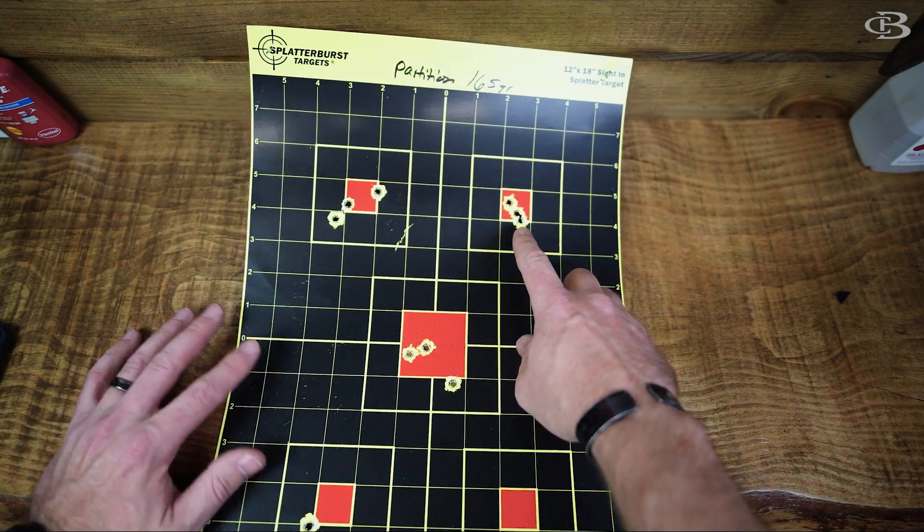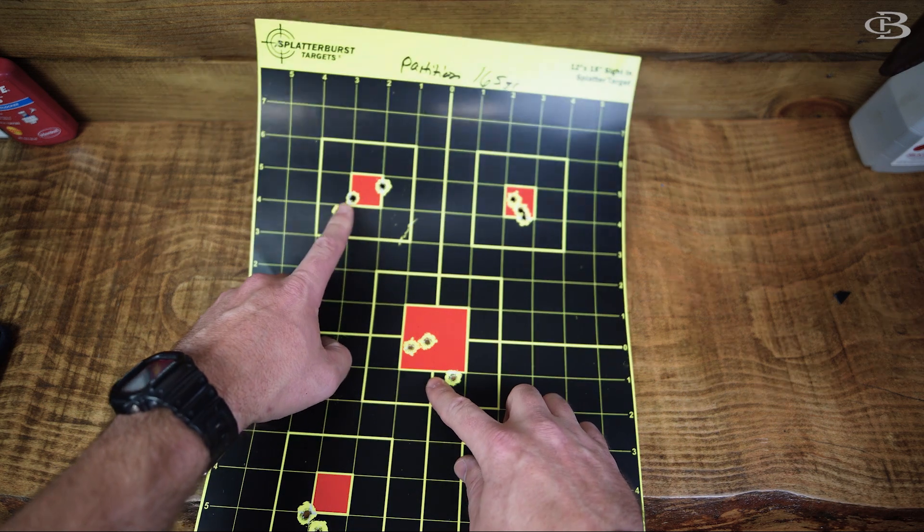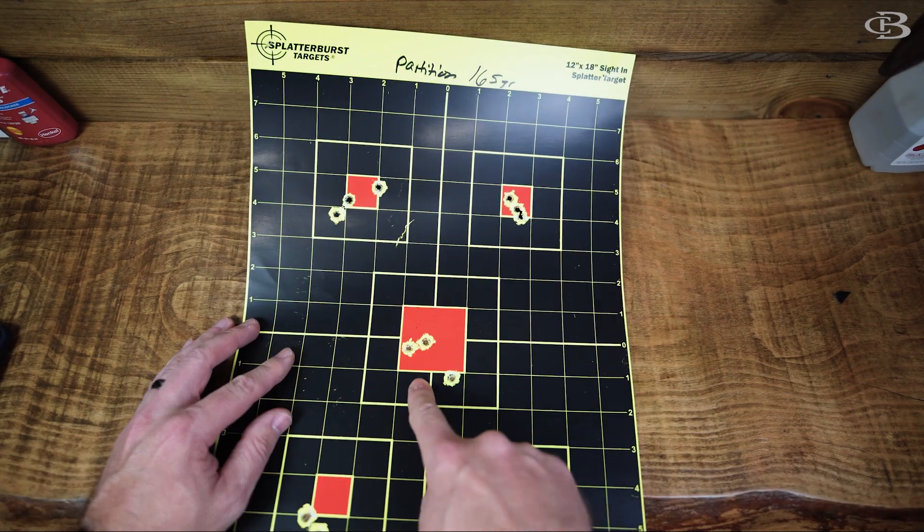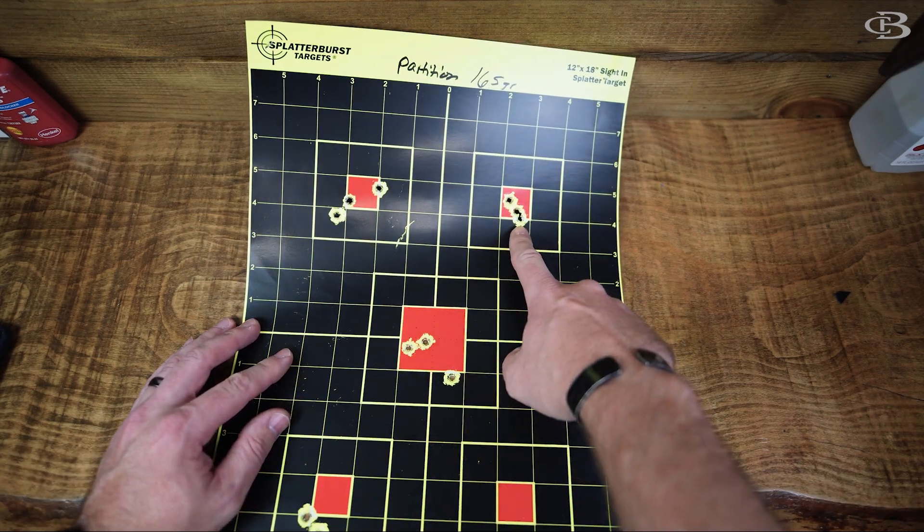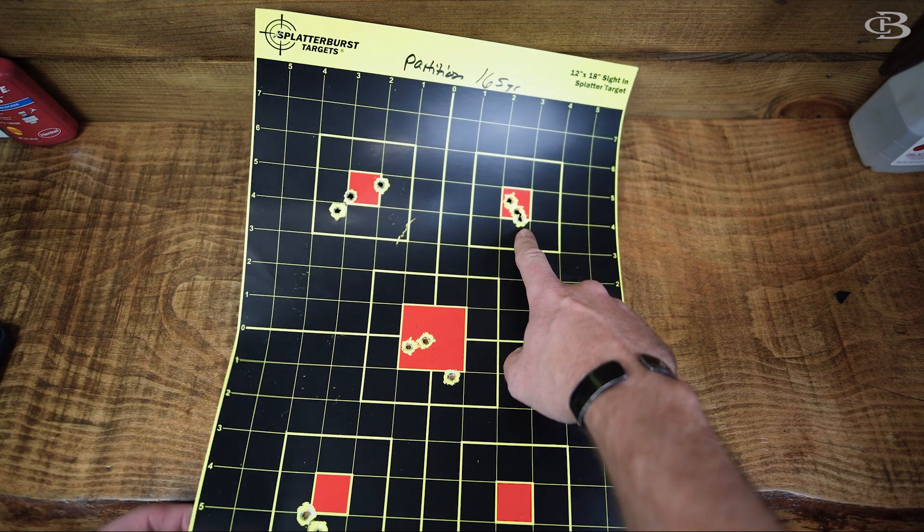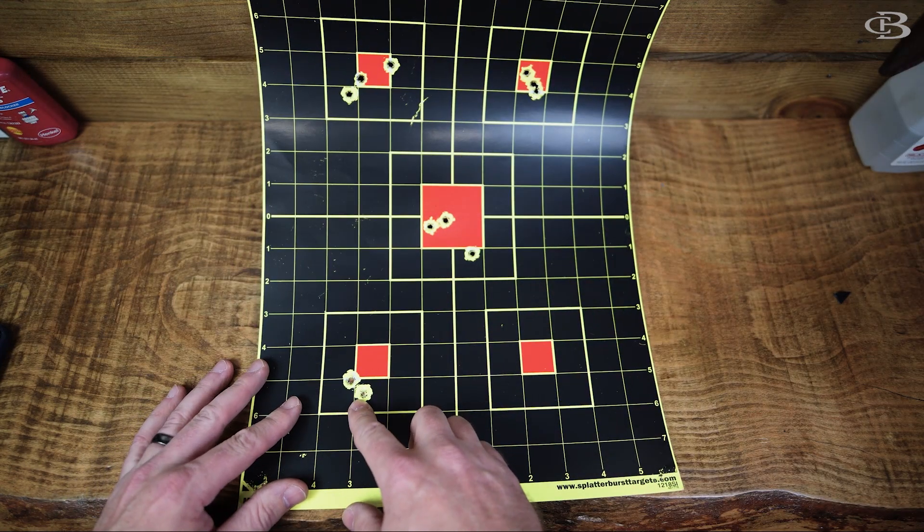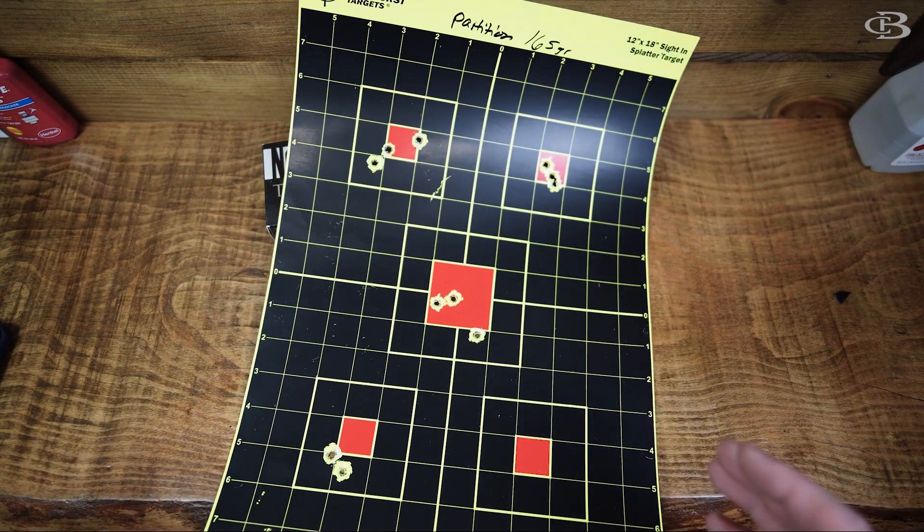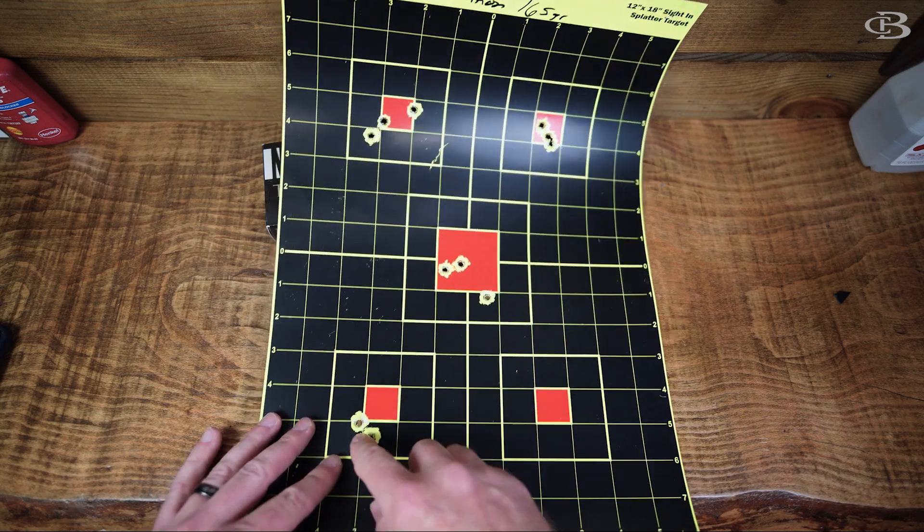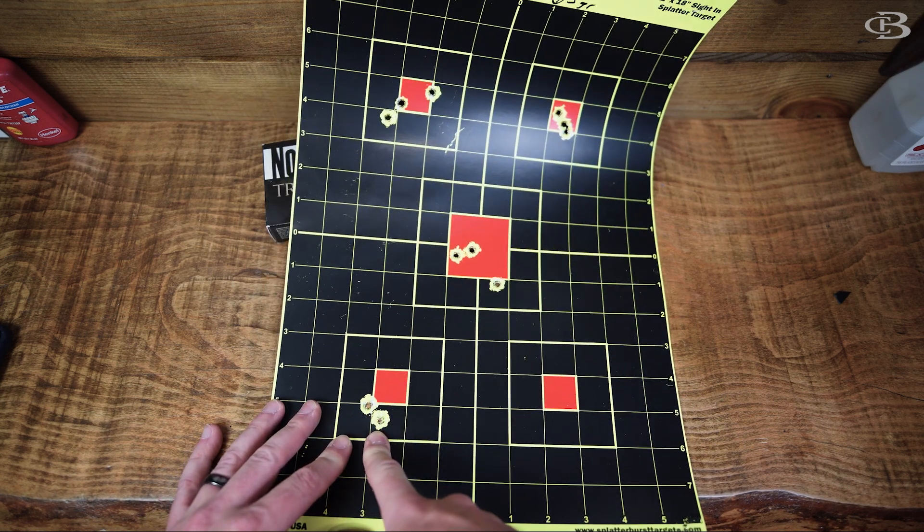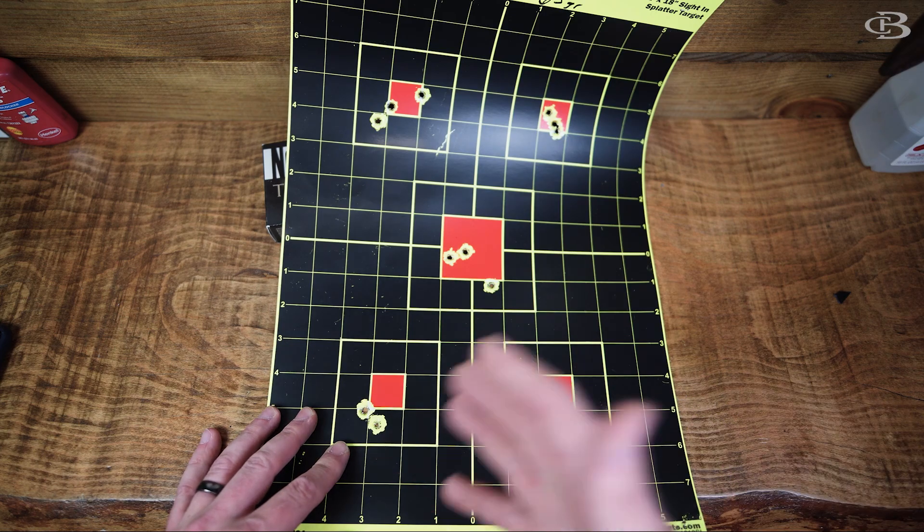And as you can see, I didn't actually measure these, but these are probably 1.25, 1.5 inches, super close, maybe three quarters of an inch. And then this one's definitely probably like half an inch. So as far as center to center, these are two in the same hole and then one right here. So these are great.